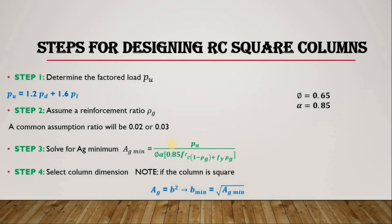Hello everyone. In this lesson we are going to take a look at the steps for designing a reinforced concrete square column, and this is going to be based on ACI code, which is known as American Concrete Institute code. Before you can properly design a reinforced concrete column, there are a series of steps you need to follow, so let's take a look at the steps.